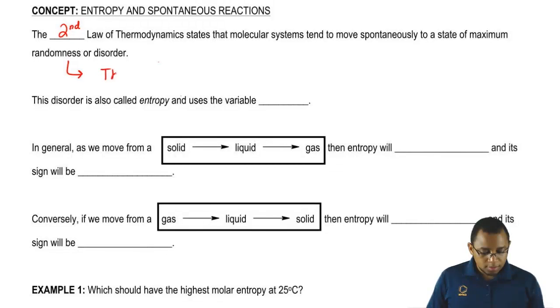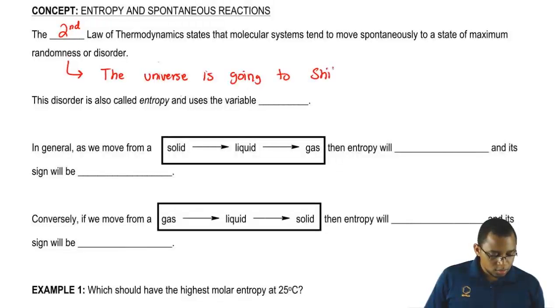Simply put, the second law says that the universe is going to shit. Just think of it like that. The universe is getting crappier by the day. This is the natural state of the universe. This is all the second law of thermodynamics is saying.